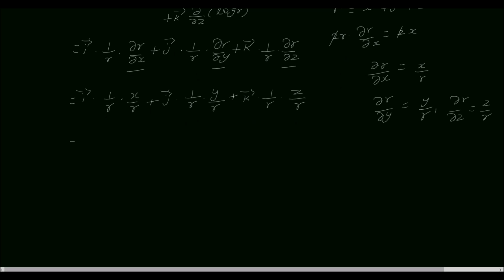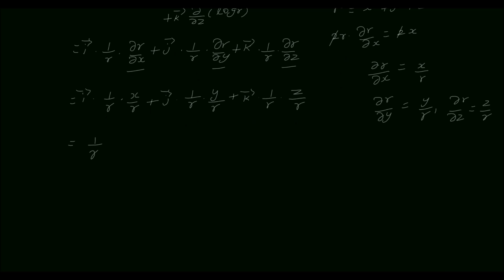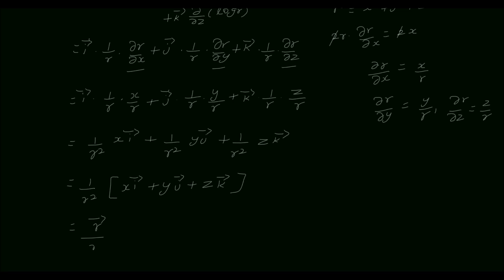This equals (1/r²) times xi vector, plus (1/r²) times yj vector, plus (1/r²) times zk vector. Taking 1/r² as a common factor outside gives (1/r²) times (xi vector + yj vector + zk vector), and since xi + yj + zk equals r vector, this simplifies to r vector divided by r².